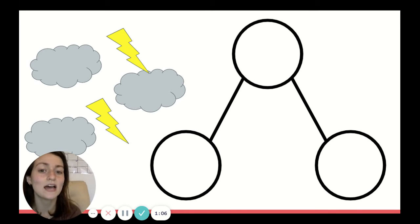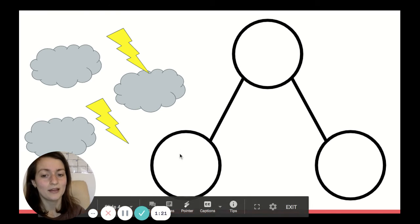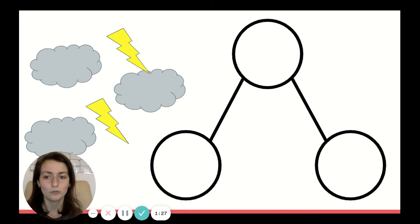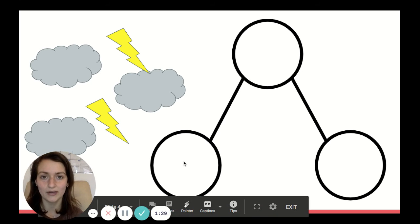So now I just have to use a number bond to represent this problem. So I'm going to ask myself, I started with three clouds. Is three clouds the whole or is that just part of my story? That's just part of my story. So I would put my three clouds in this bottom area here. What is my other part of the story? Well, my two lightning bolts would go in here.